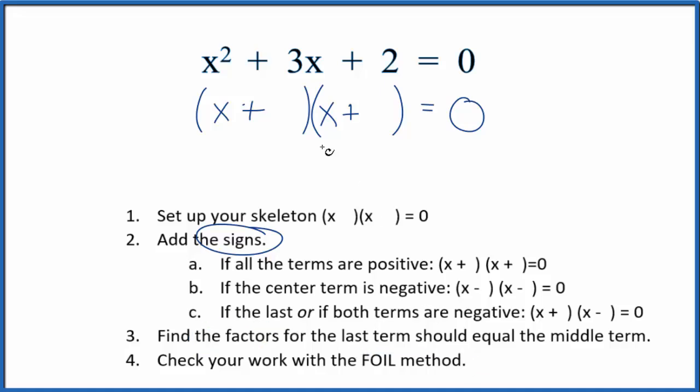We want to find factors that add up to this middle term, this 3 here. So for 2 there really is only one set of factors. It's 2 times 1. So if we put a 2 and a 1 here, 2 plus 1 adds up to 3.